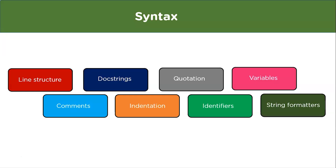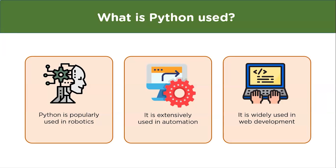The type of a variable is decided on the basis of the value assigned. We can assign a string to a variable and an integer to another variable and print them both. Last is string formatters — this method is used to format a string into a nicer output.